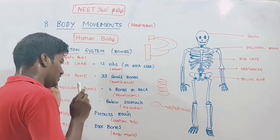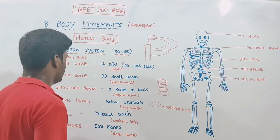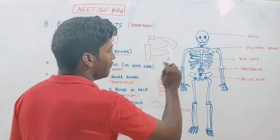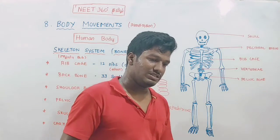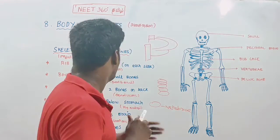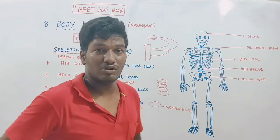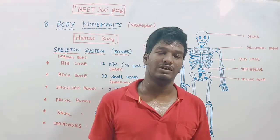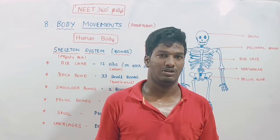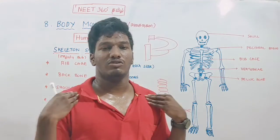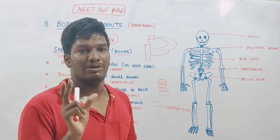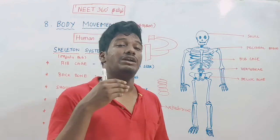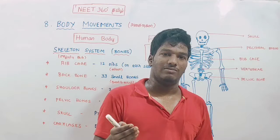So we'll talk about the shoulder bone. The shoulder bone is a good one. The tendon bone is a good one.